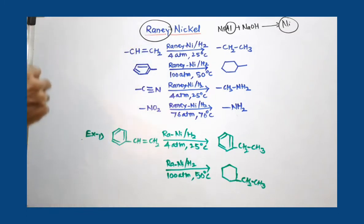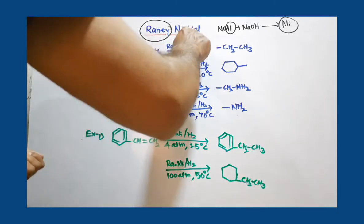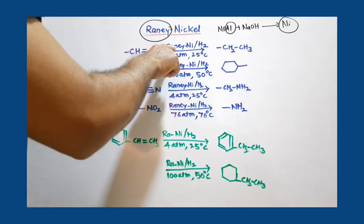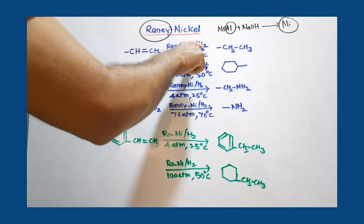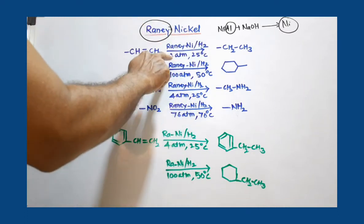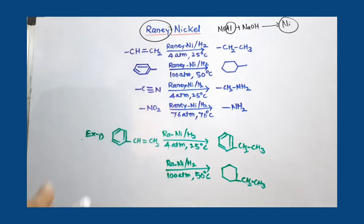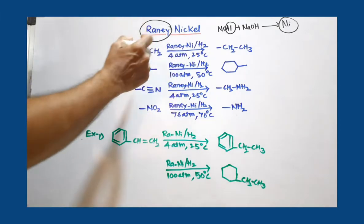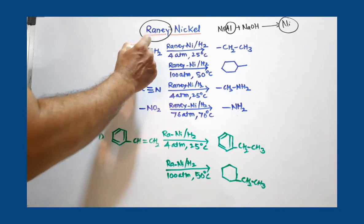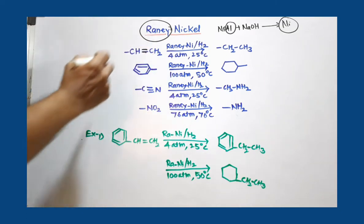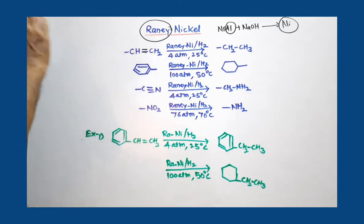Where double bonds or triple bonds or unsaturation is there, that is reduced by using this catalyst and hydrogen. Whenever you write, this is written as Raney Nickel and H2 gas is used. The pressure is 4 atmospheric pressure and 25 degree Celsius temperature. You have to target only unsaturated compounds, unsaturated bonds or unsaturated part of the molecule.